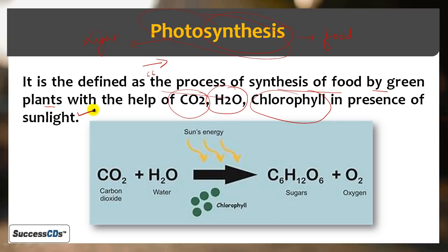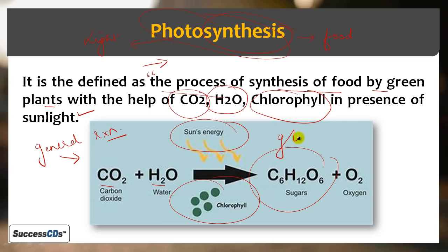Photosynthesis is the process of synthesis of food by green plants with the help of CO2, water, chlorophyll, in presence of sunlight. As you can see in this figure, the general reaction shows carbon dioxide reacts with water in presence of sun energy and chlorophyll pigment to form food in the form of simple sugar, glucose, and oxygen is released as a by-product.